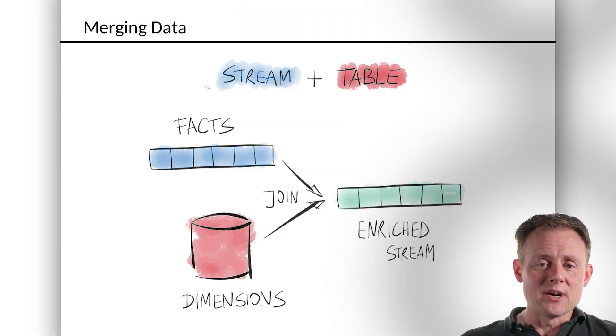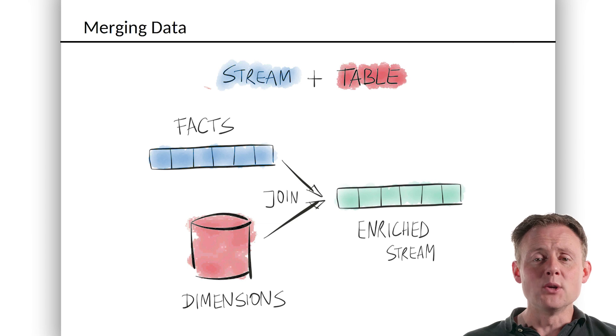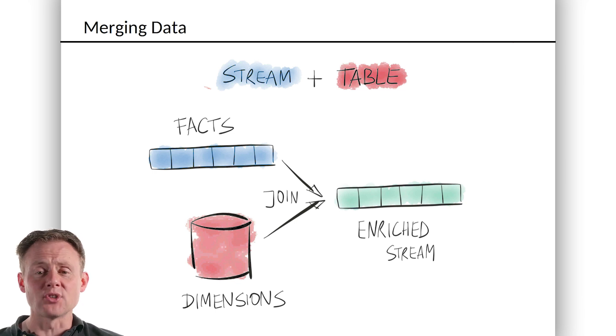If you imagine this diagram here, my facts are, of course, that's my newly repartitioned stream of play events. And what would my dimensions be? Well, here, let's just imagine that we have a song table.